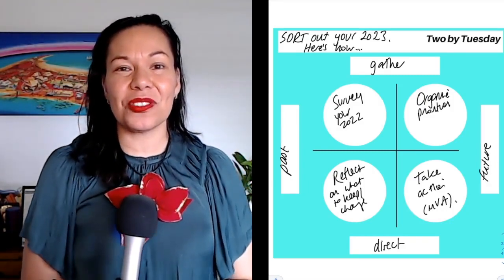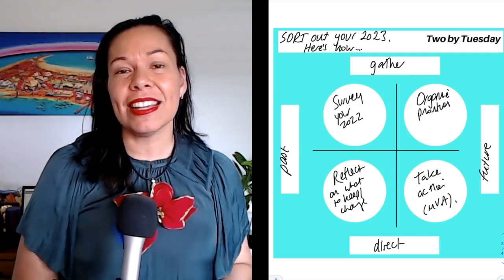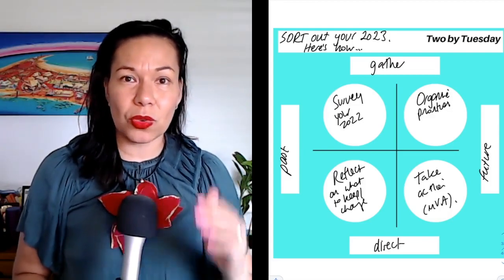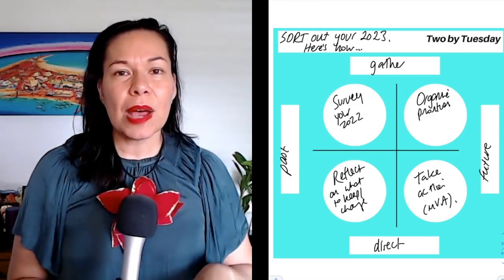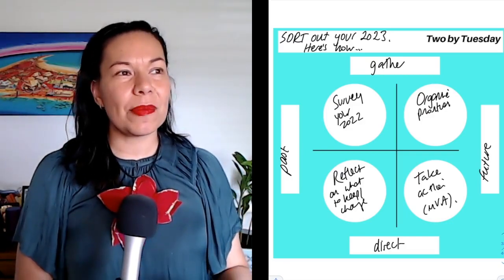A nice book on take action, of course we're going to shout out to MBS, Michael Bungay Stanier, the book How to Begin. I think MBS's book really hits the two right areas of this matrix, organized priorities and take action.